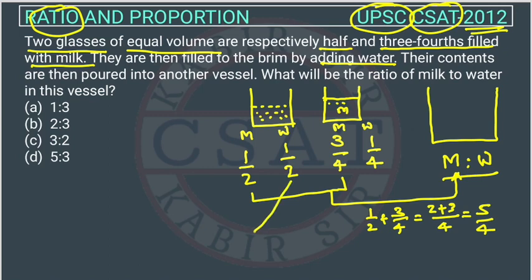Similarly, how much will be the water? 1 by 2 water from here, 1 by 4 water from here. So it will become 1 by 2 plus 1 by 4. Let's take 4 LCM. So this will become 2 plus 1, so it is 3 by 4.